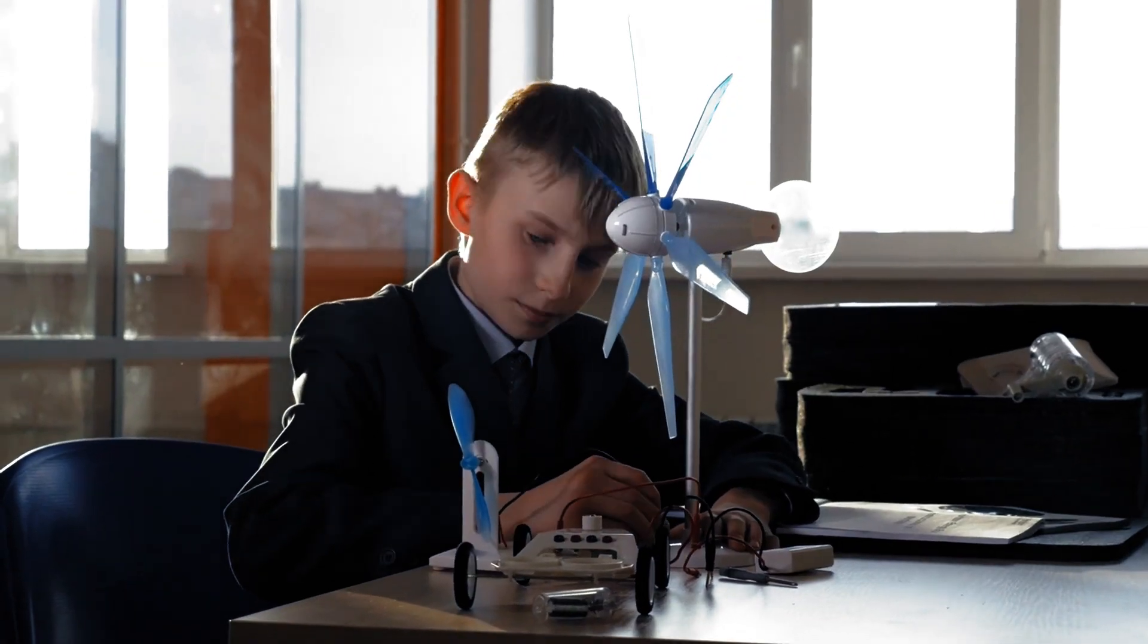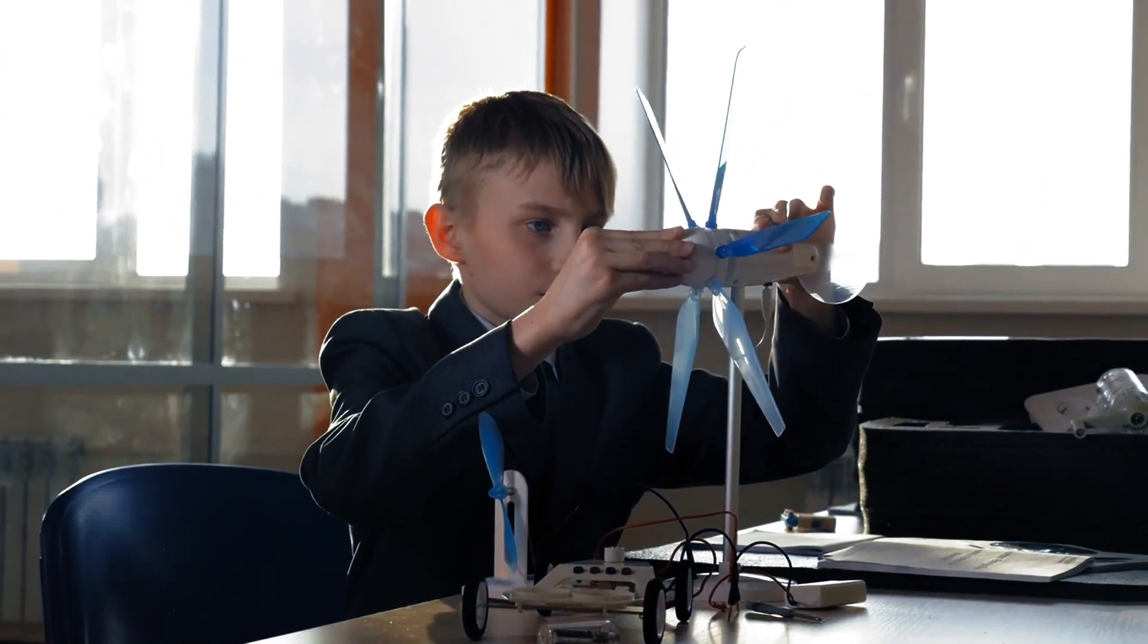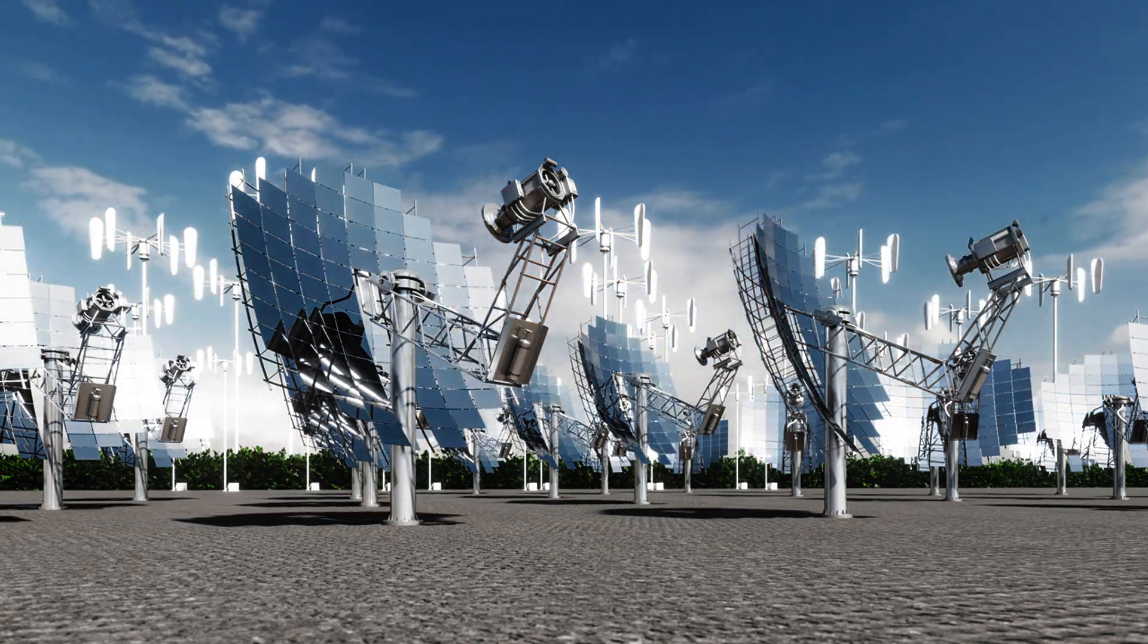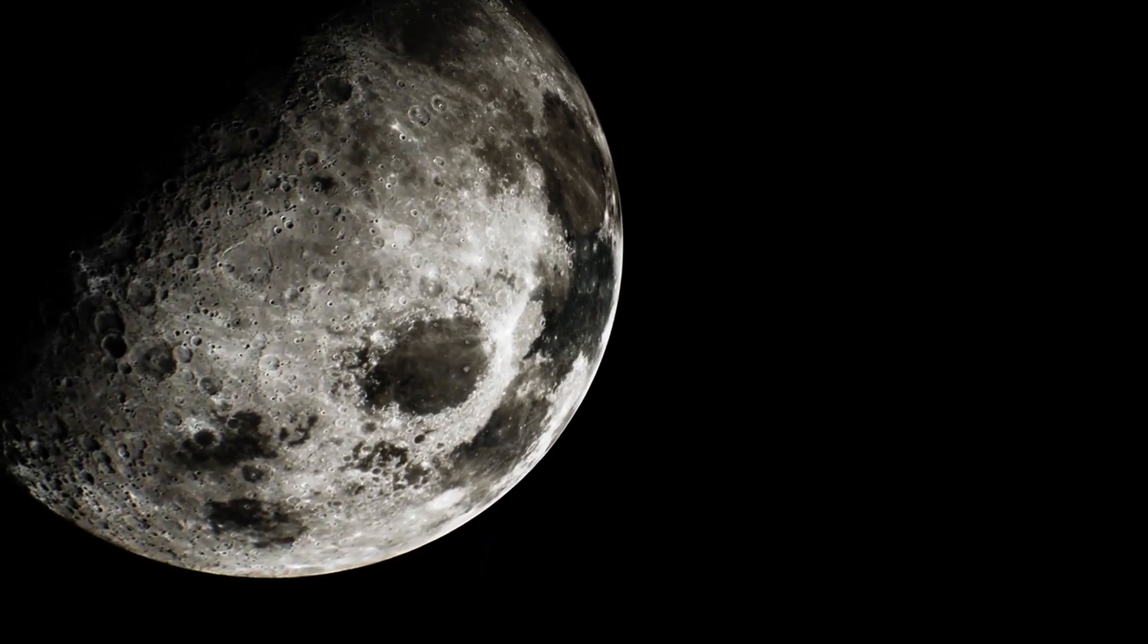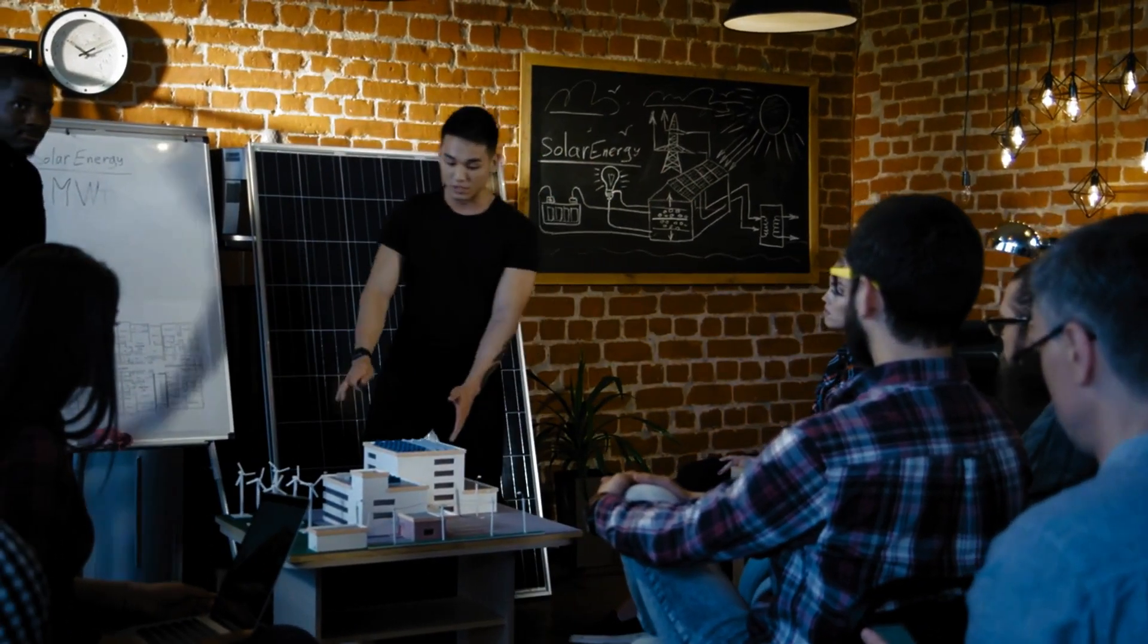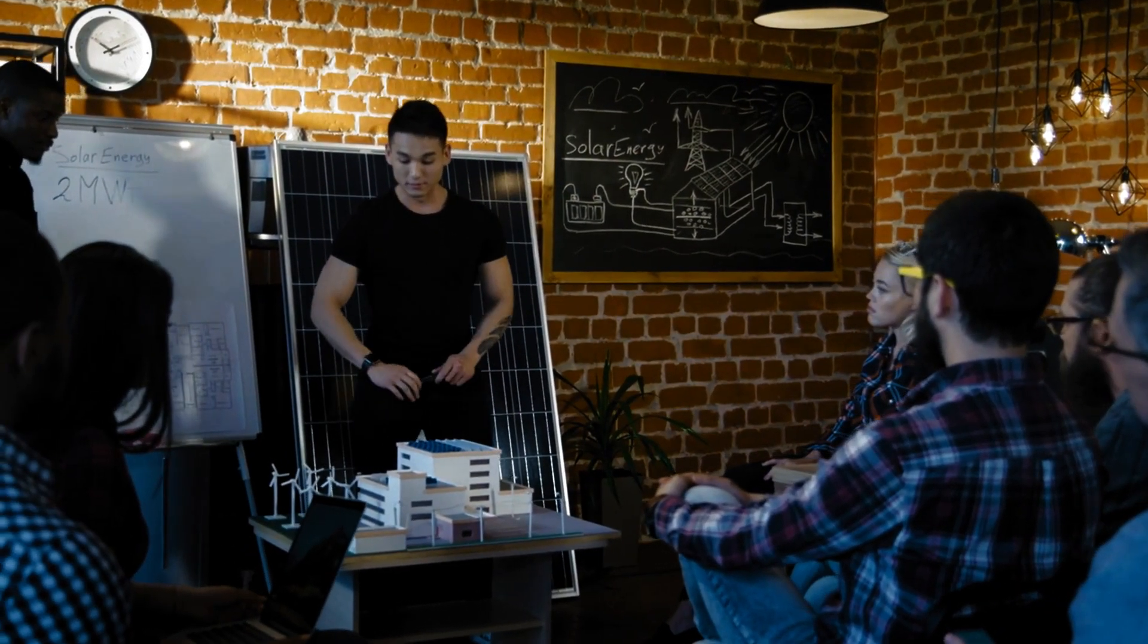In fact, some scientists are already working on smaller scale versions of the concept. There's talk of building solar satellites that could beam energy back to Earth. It's like a baby step towards a Dyson sphere. We've got to crawl before we can run, or in this case, before we can envelop an entire star.